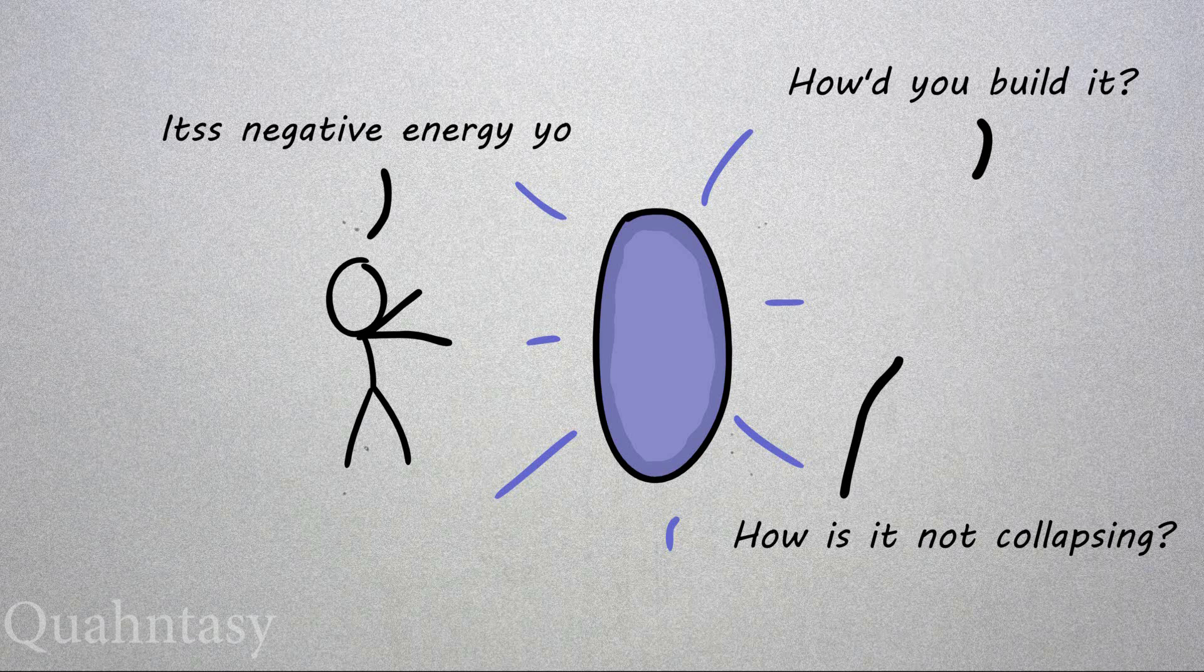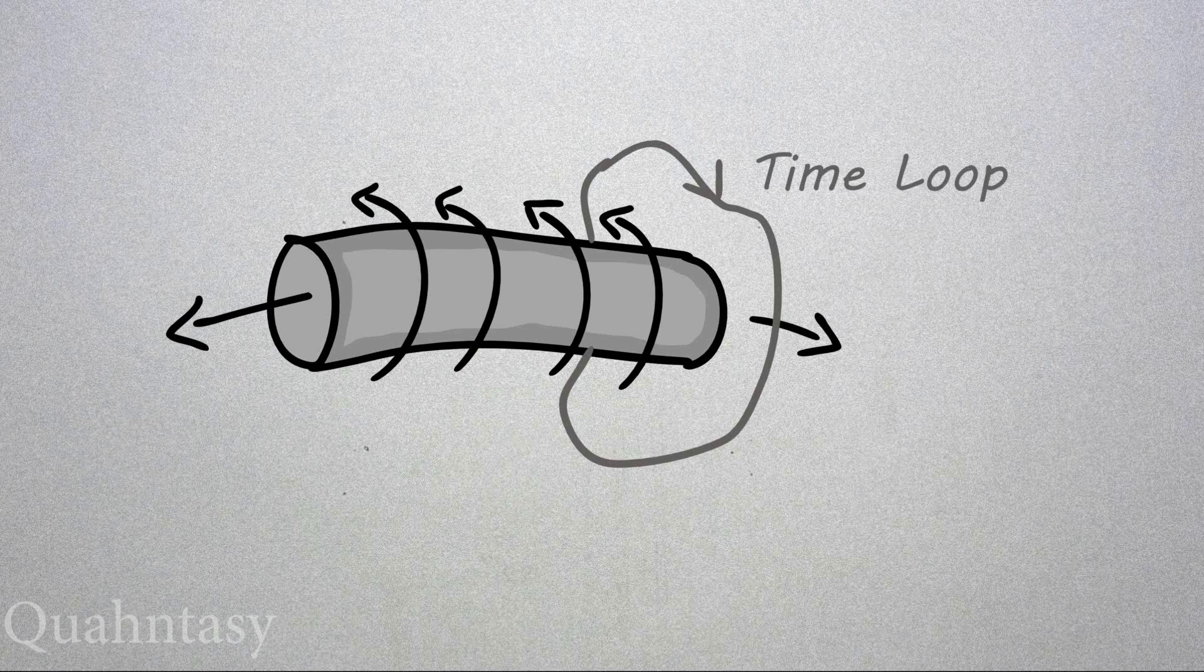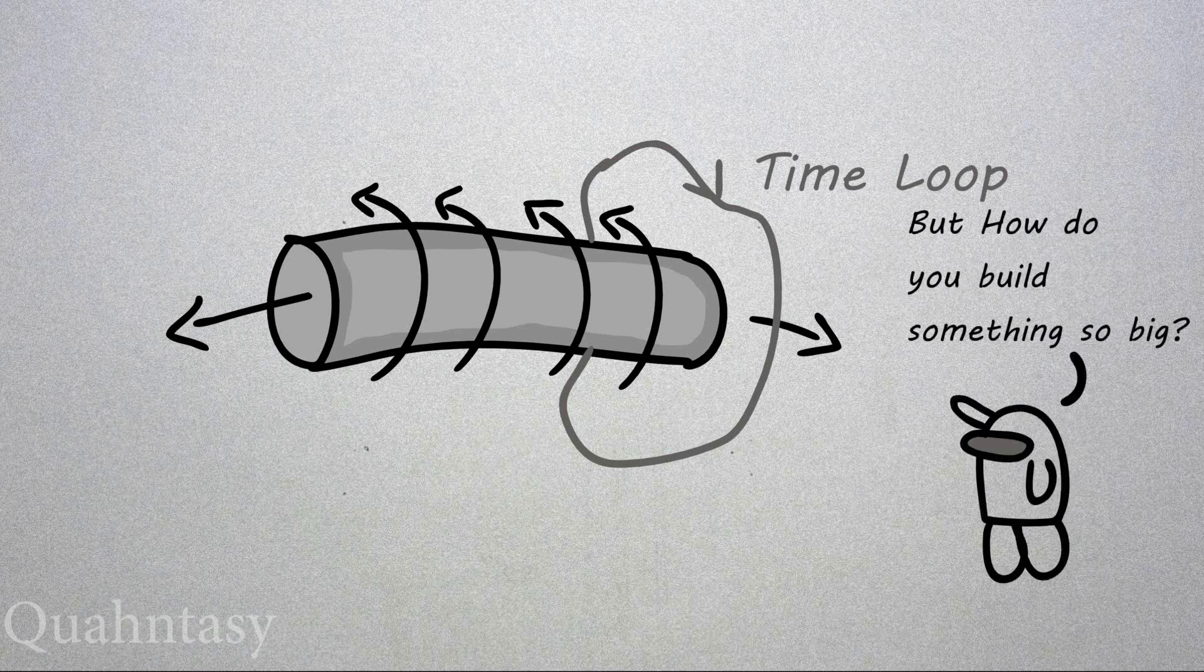Another idea is to use a rotating cylinder of light to twist space-time. An infinitely long, super dense spinning cylinder which would also curve space-time enough to create a time loop. The problem, of course, is how do you build something that's infinite in size? It's probably the worst in terms of practicality, so I wouldn't even bother about it.